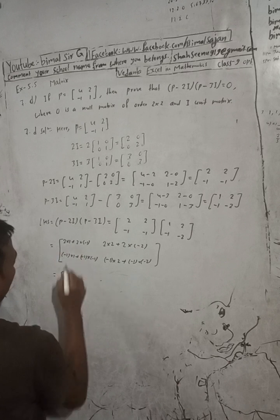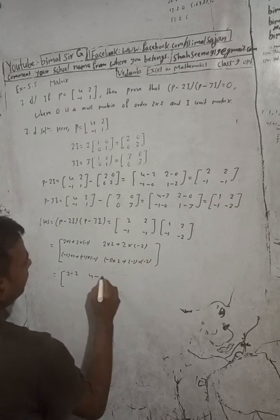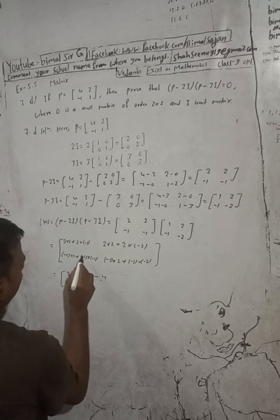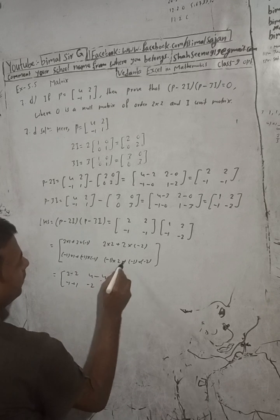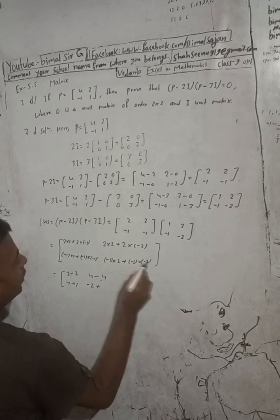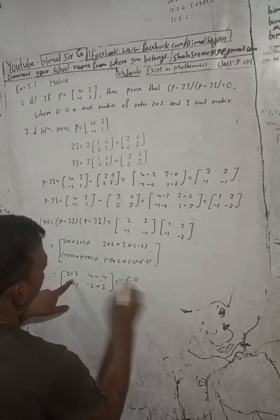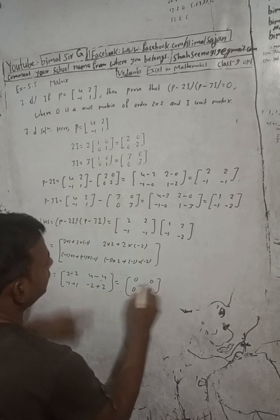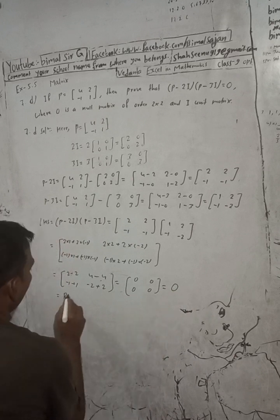Here now: 2 times 1 is 2, plus minus 2 is 0. 2 times 2 is 4, plus minus 4 is 0. Minus 1 into 1 is minus 1, plus 1 is 0. Minus 1 into 2 is minus 2, plus 2 is 0. So this is equal to [0 0; 0 0], which is the O matrix, the null matrix. This equals the right-hand side, proved.